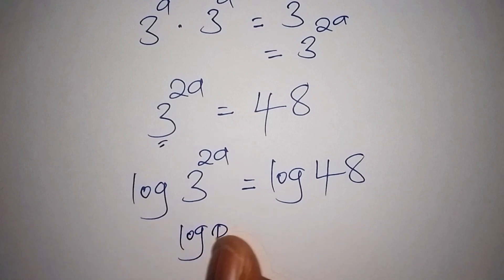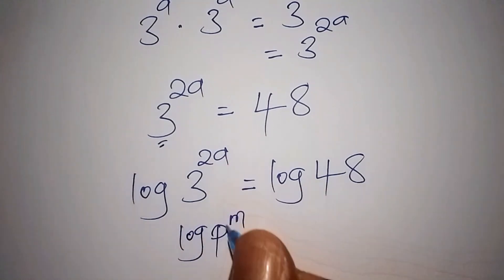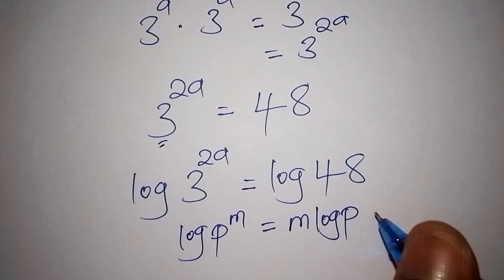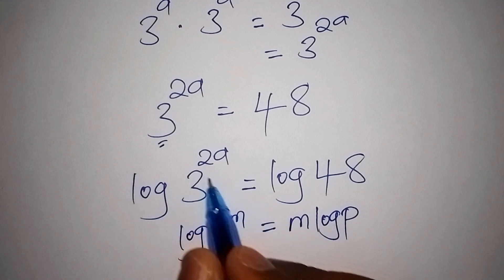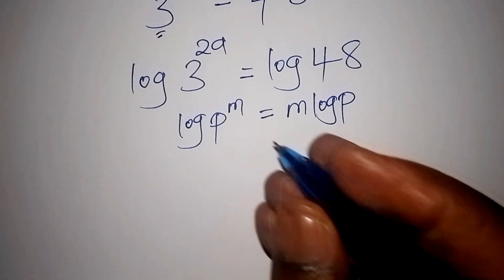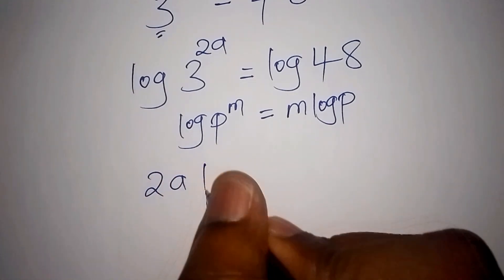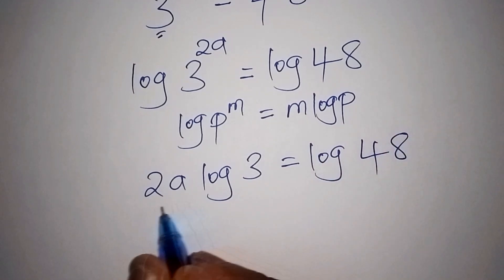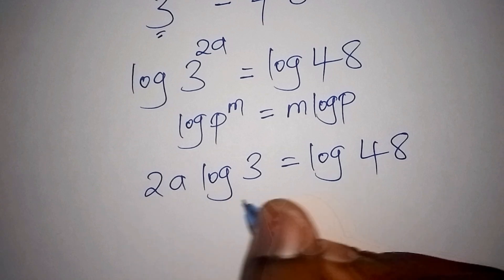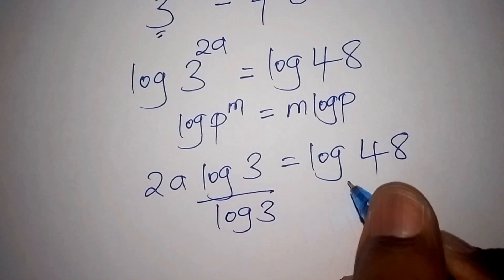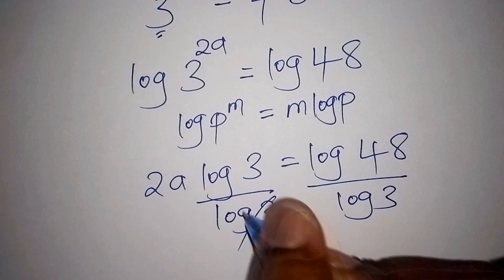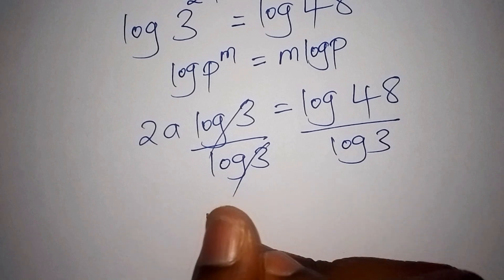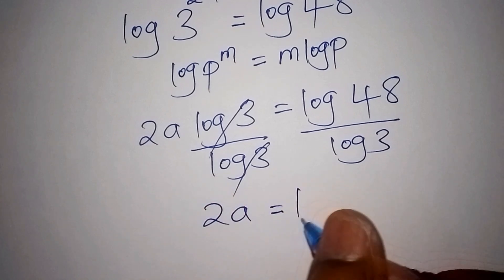Using the logarithm power rule — log of p to the power of m equals m times log of p — we can rewrite the left side. So log of 3 to the power of 2a becomes 2a times log of 3, which equals log of 48. Dividing both sides by log of 3, the log of 3 cancels, and we are left with 2a equals log of 48 over log of 3.